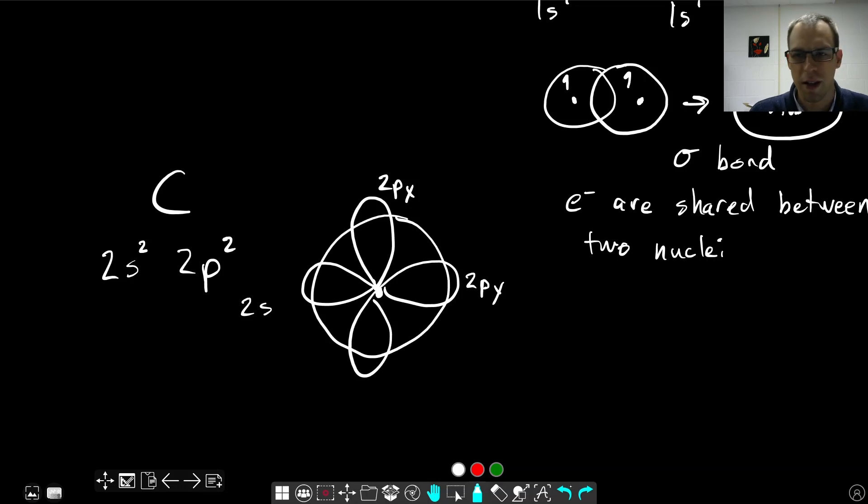So we know that carbon, if it forms bonds, is going to form not in this sort of geometry. We're not going to have one bond that's sort of like a sphere, and another bond that's at 90 degrees. Carbon is going to form either like a tetrahedral geometry, or a trigonal planar geometry, or maybe a linear geometry, but not something that looks anything like these s and p orbitals. So there's something we have to do to make sense out of this.